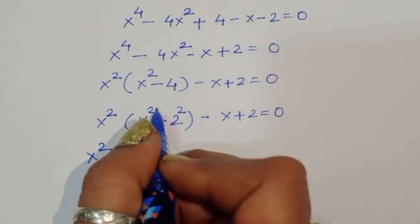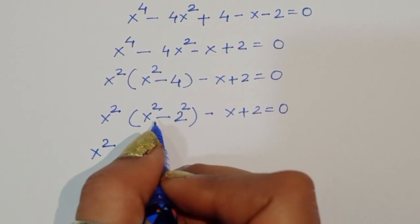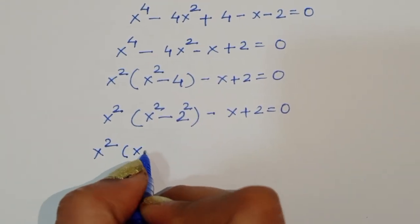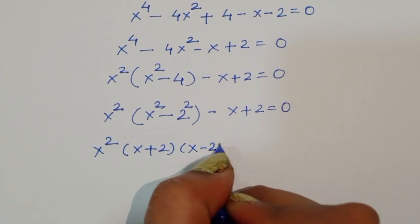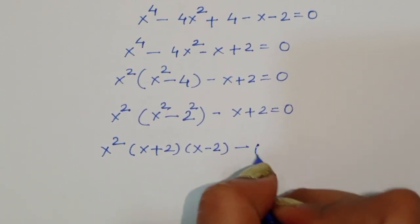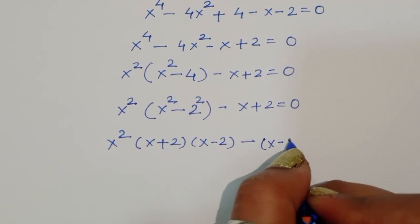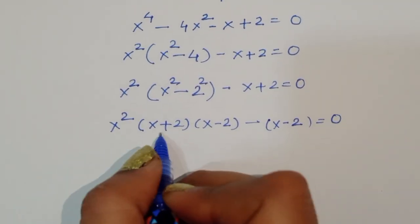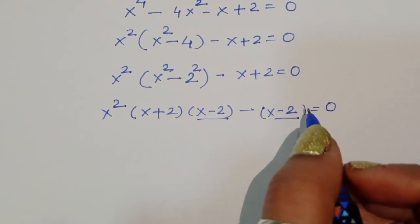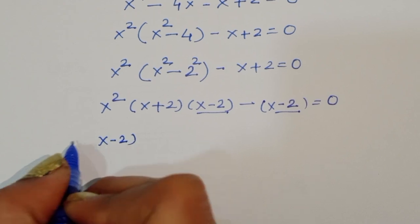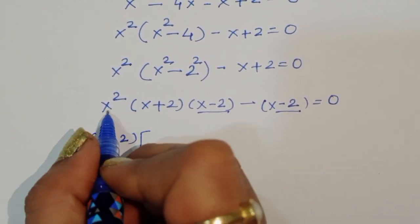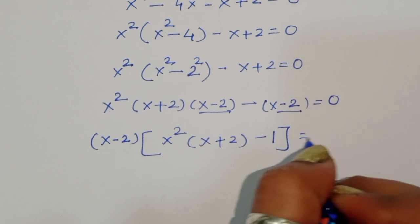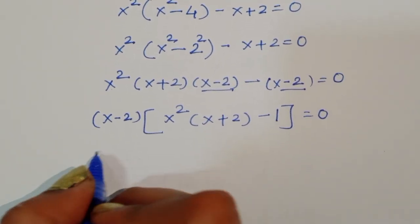Since x² - 4 = x² - 2² is of the form a² - b², we use the formula a² - b² = (a + b)(a - b). So x²(x + 2)(x - 2) minus (x - 2) = 0. Taking (x - 2) as common outside, we factor out minus to get (x - 2)[x²(x + 2) - 1] = 0.